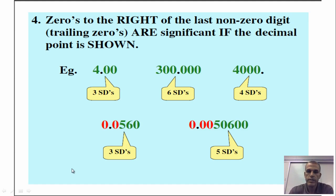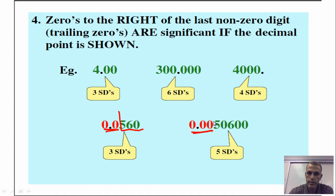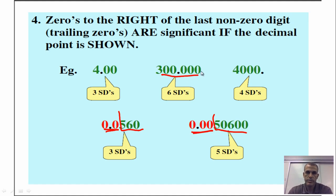In this case, we have a decimal, and as the rule states, zeros to the right of the last non-zero digit are trailing zeros — they become significant when we add that decimal point. The zeros to the left of the non-zero number will not be significant. Just the ones highlighted in green are significant digits for those two examples. All zeros are significant in all the examples shown here.